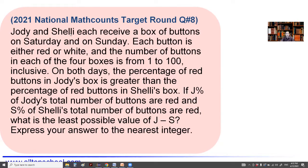Let's look at the question. Judy and Shelly each receive a box of buttons on Saturday and on Sunday. Each button is either red or white, and the number of buttons in each of the four boxes is from 1 to 100, inclusive.